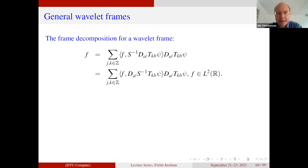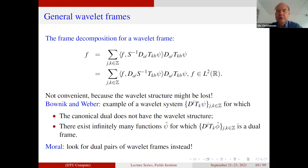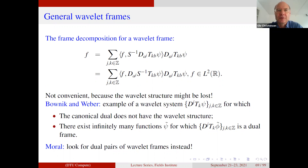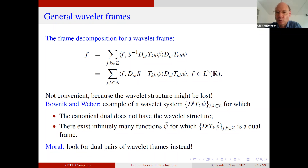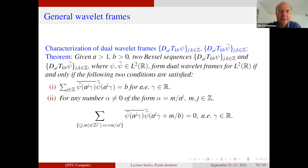There are nice results by Bownik and Weber where they looked at a wavelet system and found exactly this problem: the canonical dual does not have the wavelet structure because the operators do not commute. On the other hand, there exist infinitely many functions such that the corresponding wavelet system forms a frame and is a dual of the given wavelet frame. This motivates looking for other dual wavelet frames, and there is actually a characterization quite similar to what was done for GABA systems. You can use this theorem to find many pairs of dual frames.